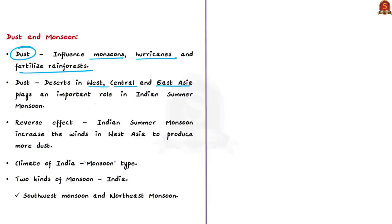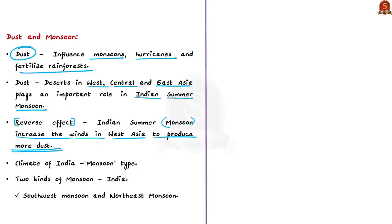The study details how dust coming from deserts in West Asia, Central Asia, and East Asia plays an important role in the Indian summer monsoon. In addition, the study also analyzed the reverse effect — how the Indian summer monsoon can increase winds in West Asia to produce more dust, forming a feedback relationship.